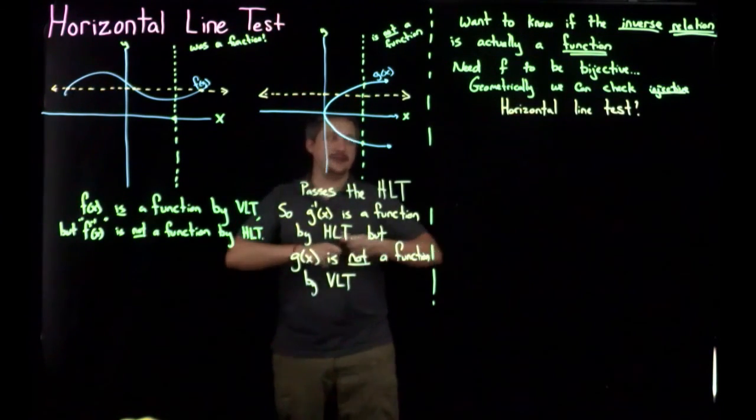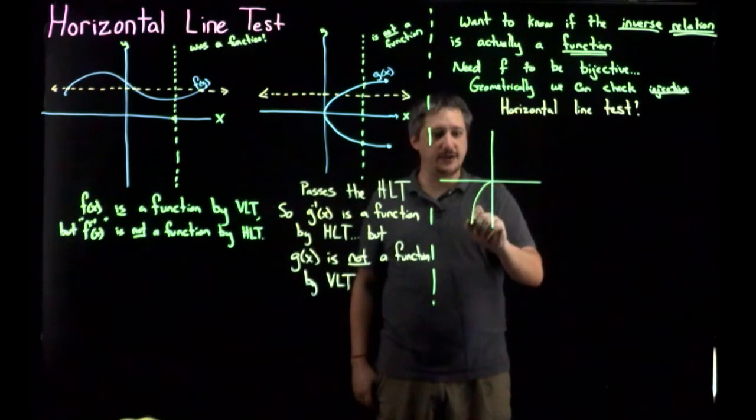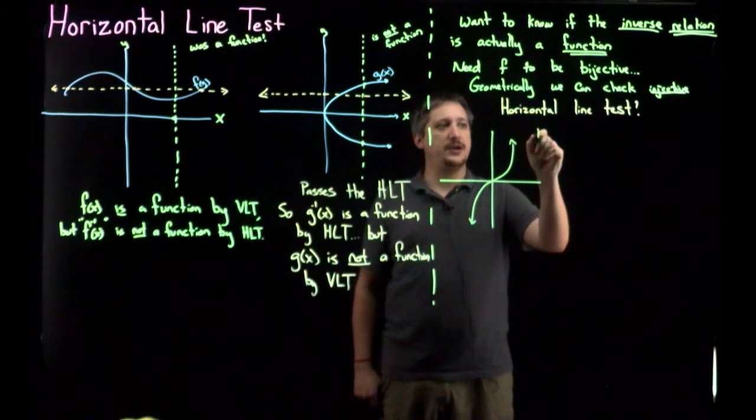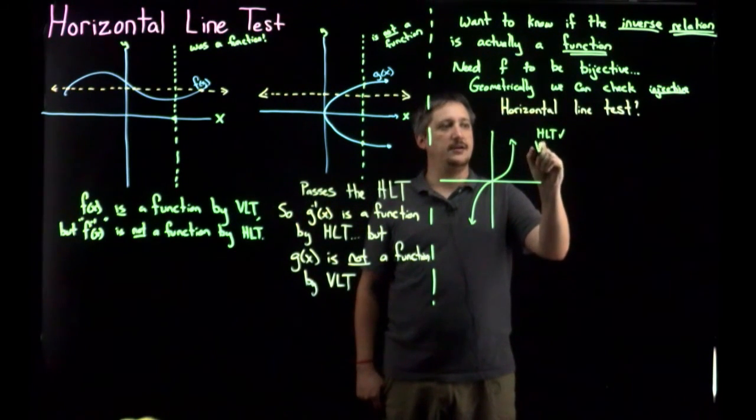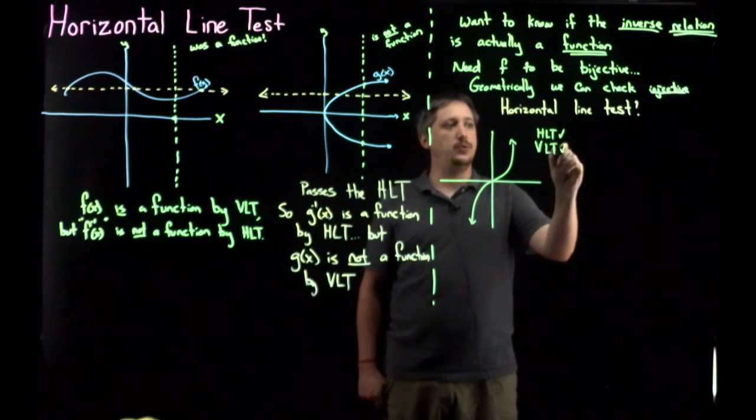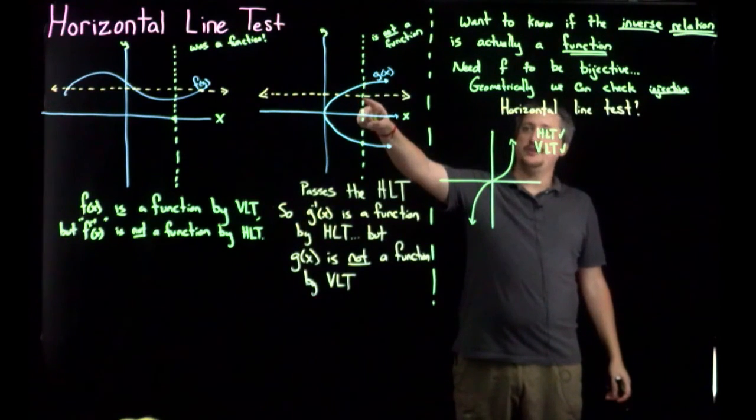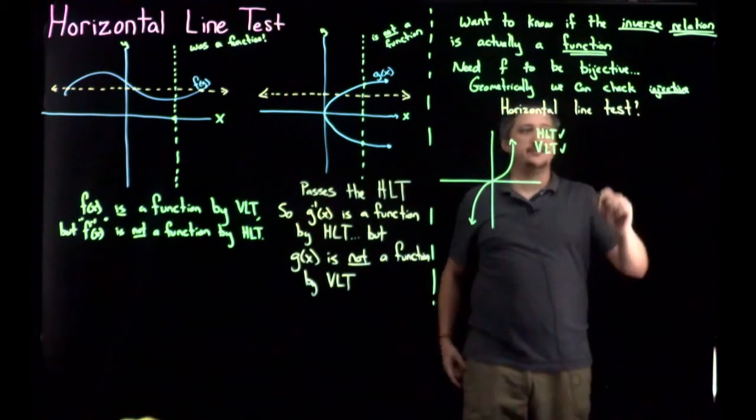So you could do something like, as a quick two second sketch, you could look at something like this would be an example. So here, and I would encourage you to do it yourself, HLT and VLT both work. Here's an example where HLT, horizontal line test works, but the vertical line test doesn't. That one, the vertical line test works, the horizontal line test doesn't.